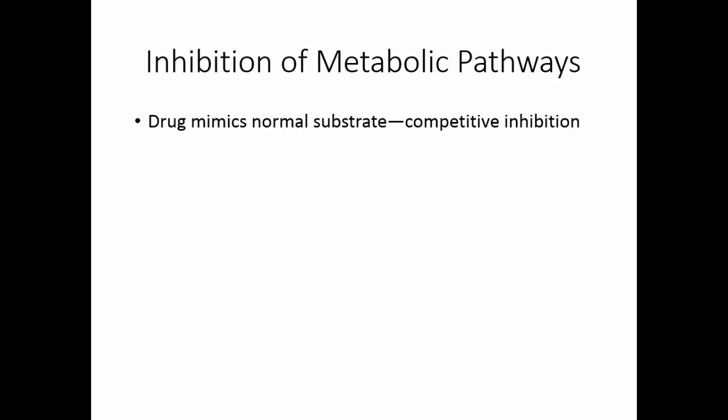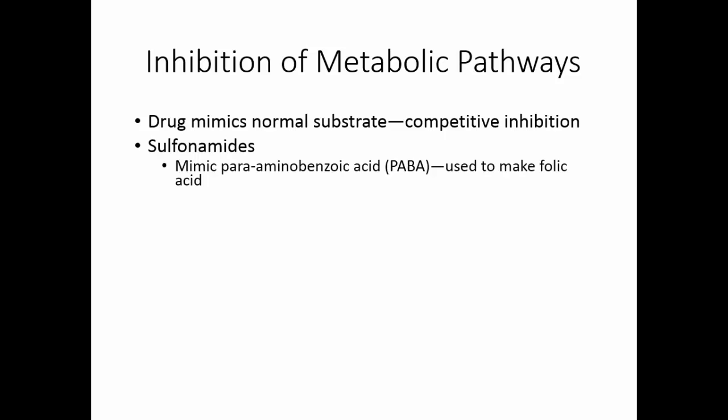When we inhibit metabolic pathways, we use drugs that mimic the normal substrate so that they act as competitive inhibitors for enzymes in the metabolic pathway. This is how sulfonamides work — they mimic para-aminobenzoic acid.